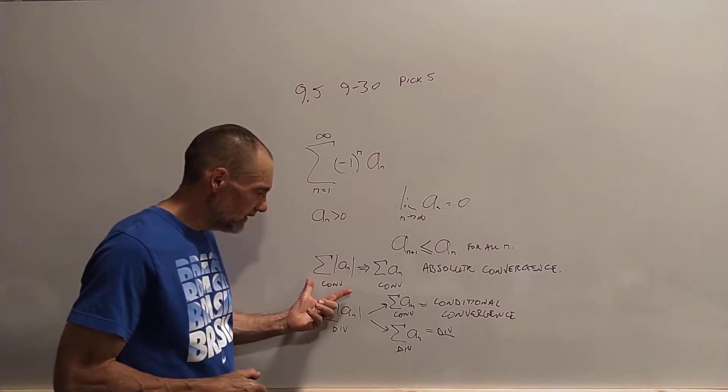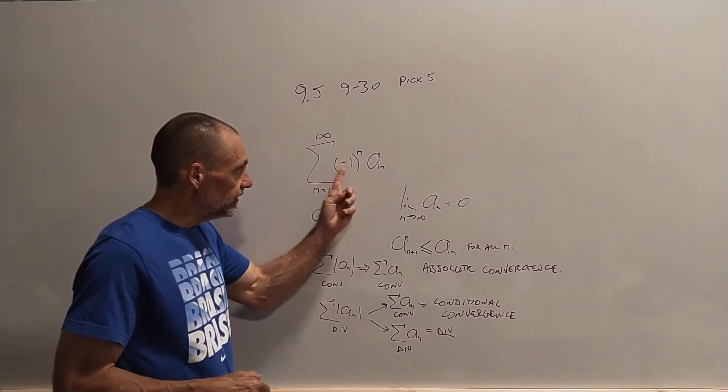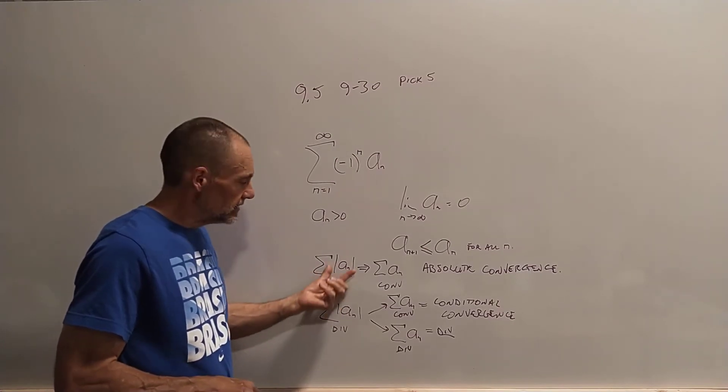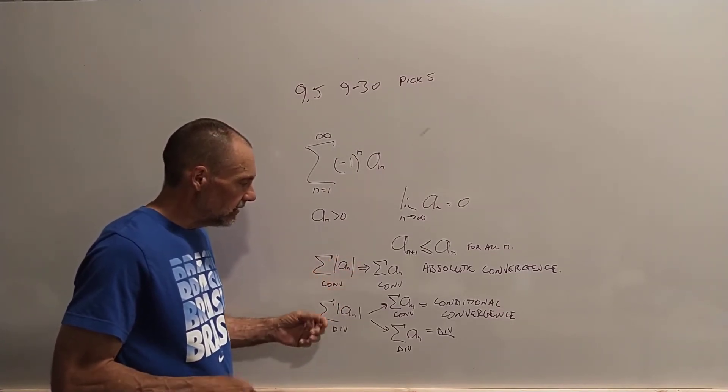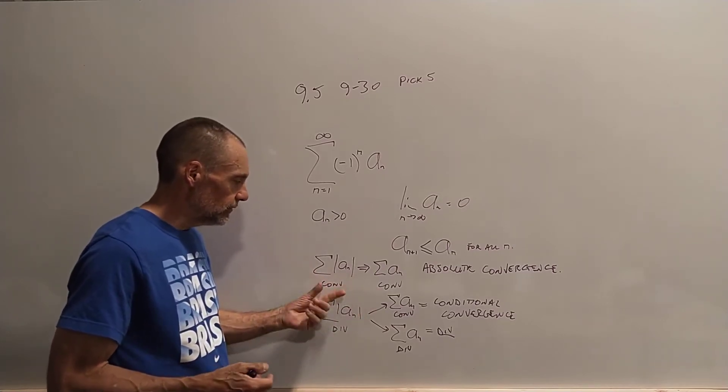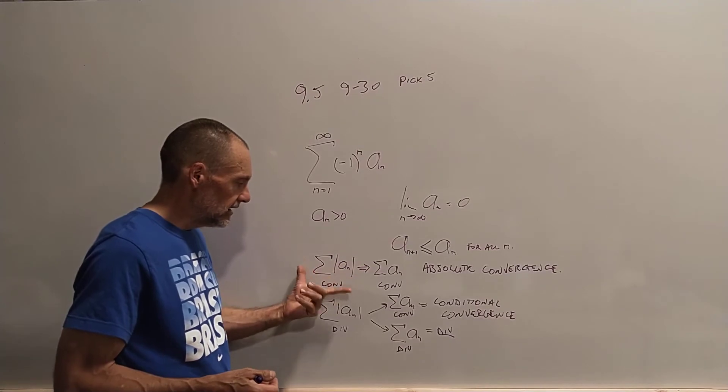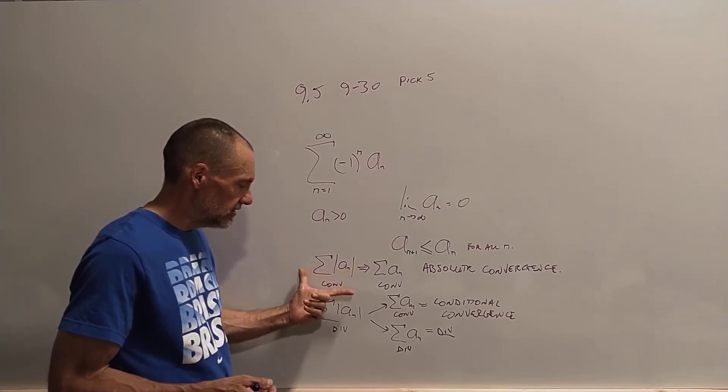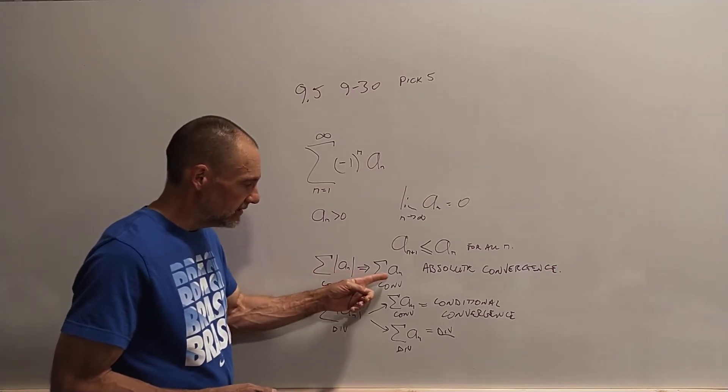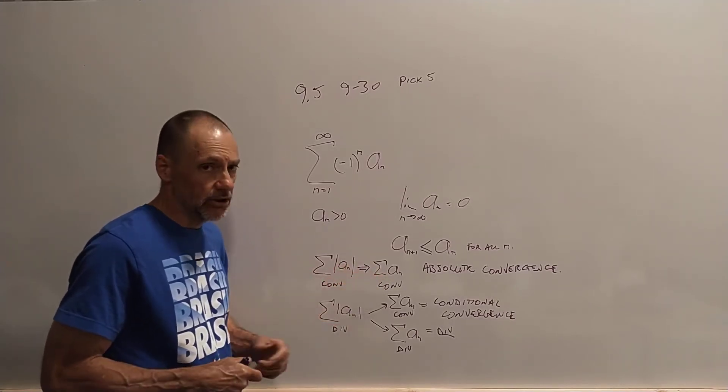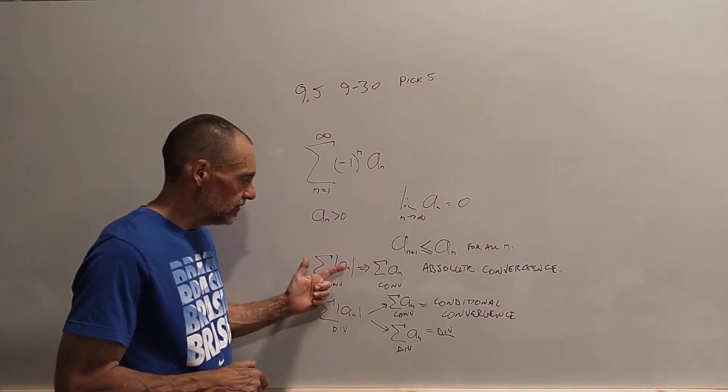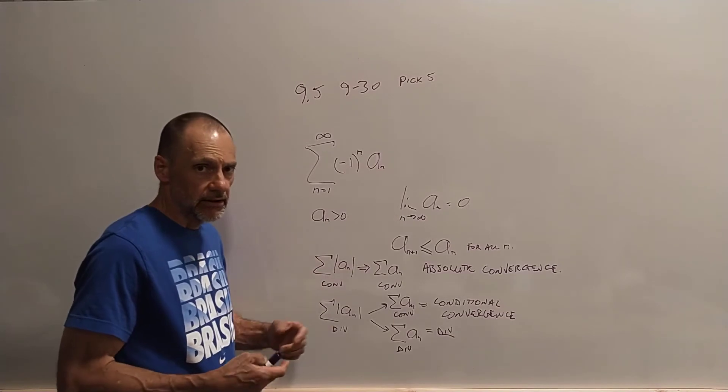Now, one way of getting rid of this thing is to take the absolute value of the sequence. So with this absolute value on here, we have this idea that if this series converges, in other words, when the absolute value is on the sequence and the series converges, that means that the series without the absolute value is going to converge. This is called absolute convergence.